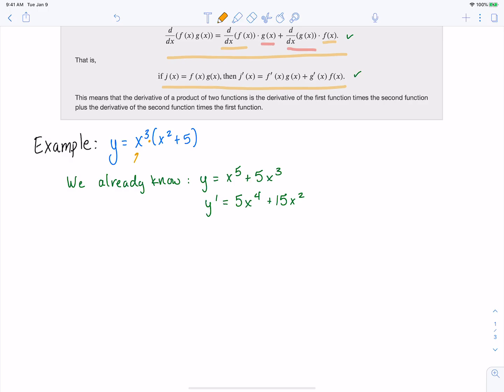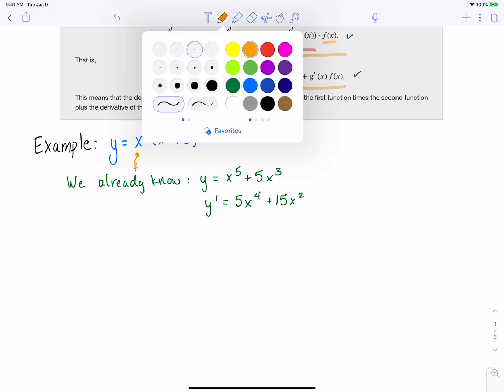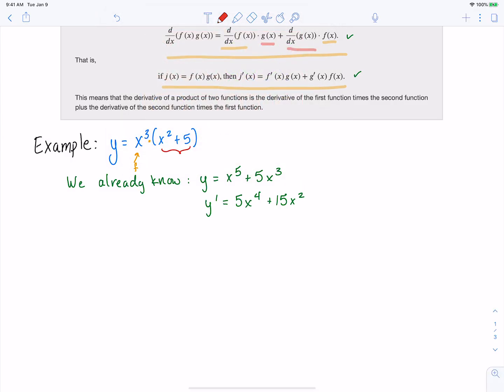our first function, our f in this case, is going to be that x³, and then the g in this case is going to be that x² + 5. And really how I know which one's which and where that dividing line is is I read that function out loud. We've got x³ times. The minute you say "times," that tells you we've already said what the whole first function is.